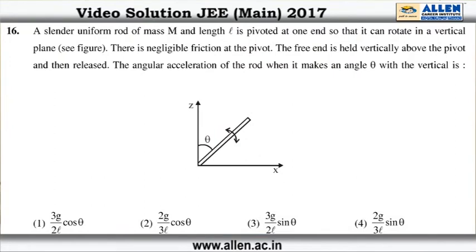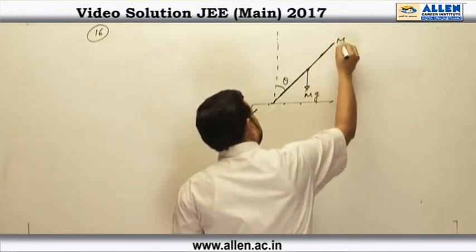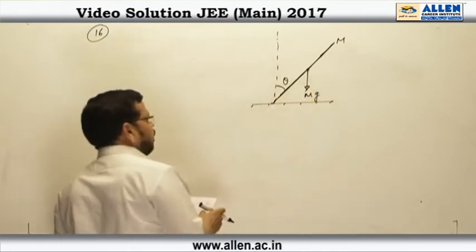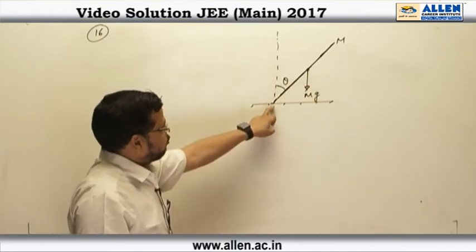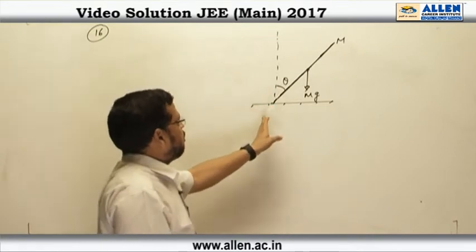Question number 16, it is based on the concept of rotation about a fixed axis. In this question a slender uniform rod of mass m is released from this position, it is pivoted here there is no friction at the pivot